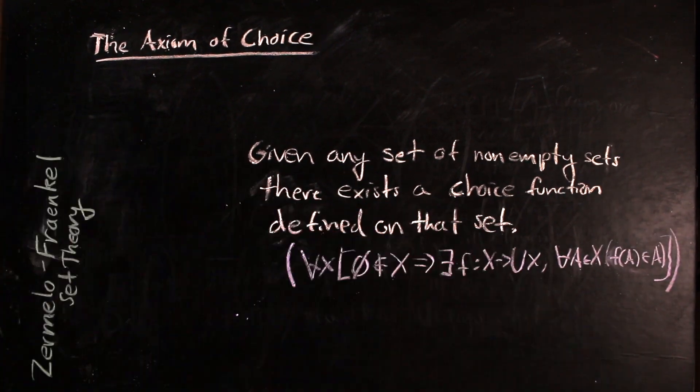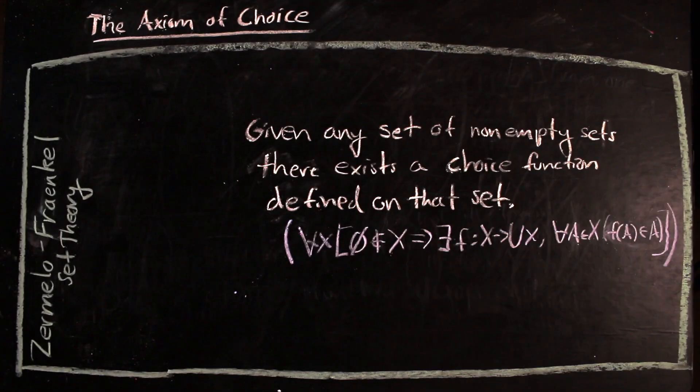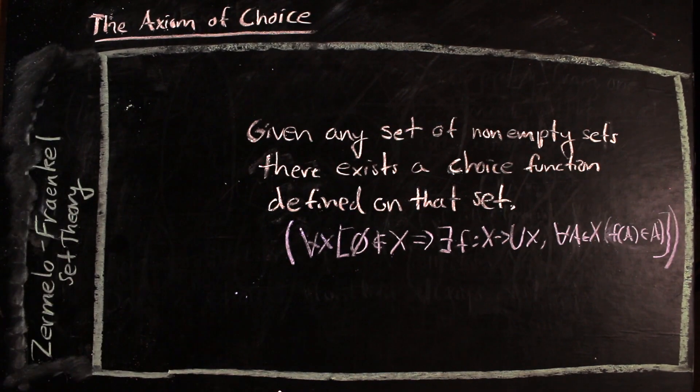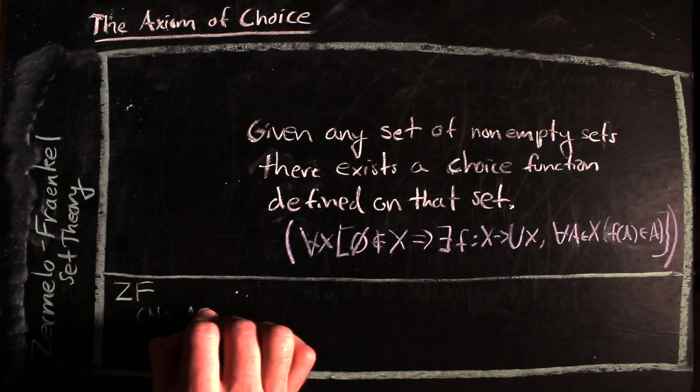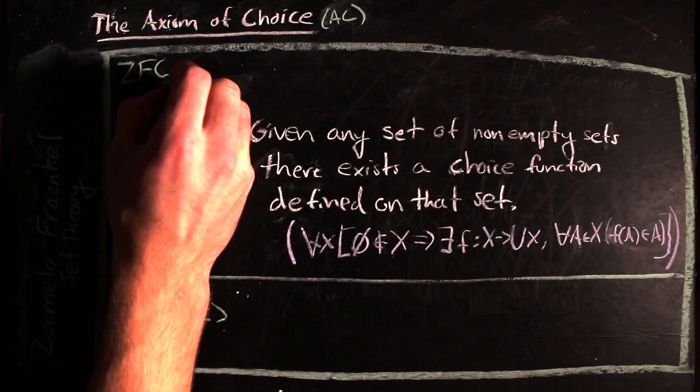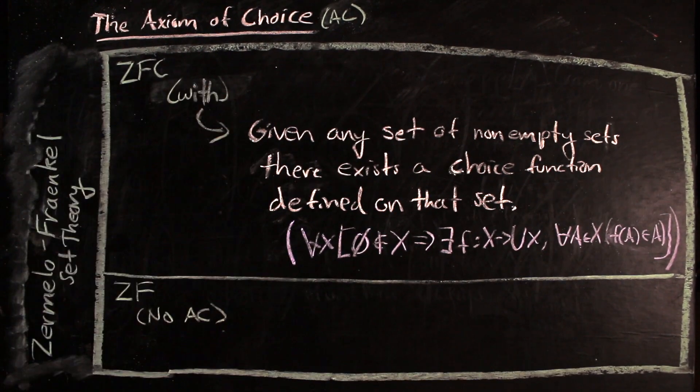And within Zermelo-Fraenkel set theory, there are two camps, ZF and ZFC. ZF is Zermelo-Fraenkel set theory without the axiom of choice, and ZFC is Zermelo-Fraenkel set theory extended to the axiom of choice.